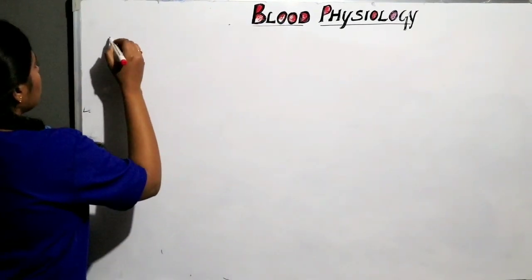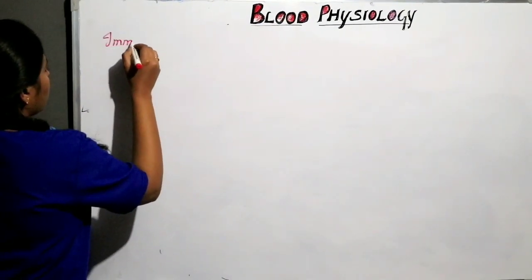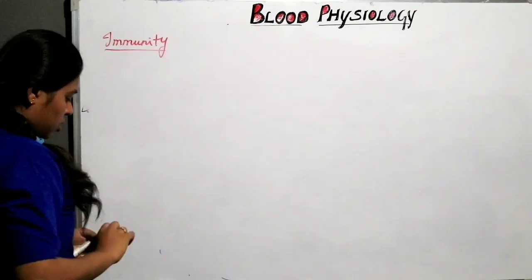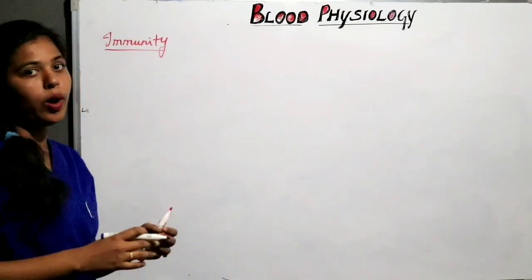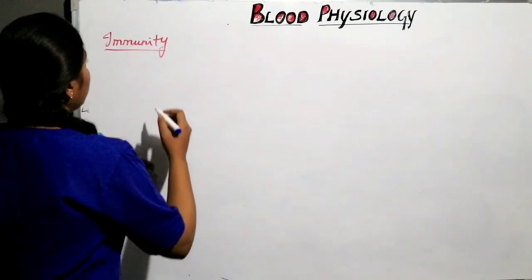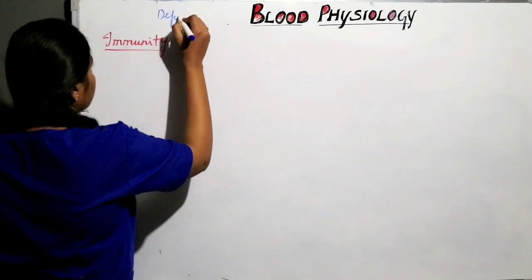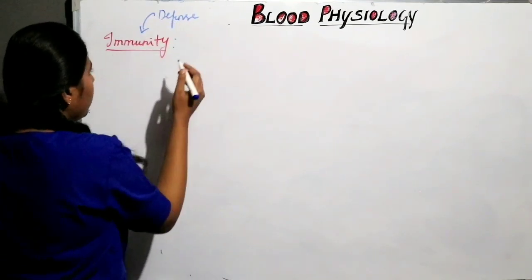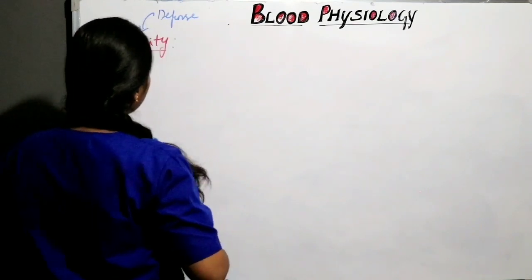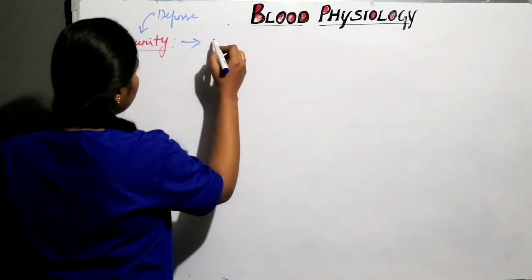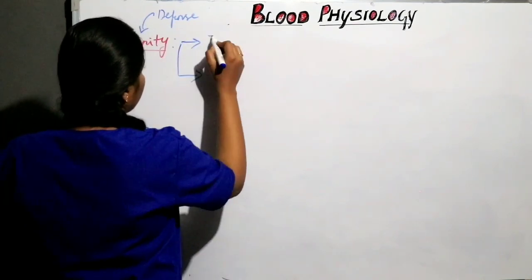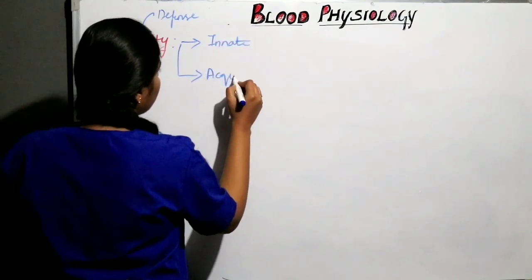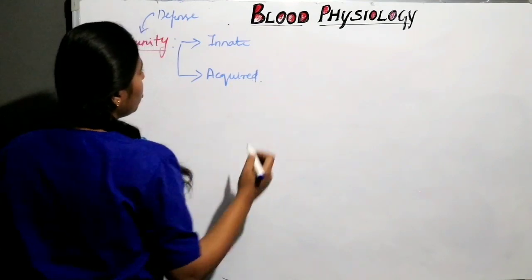Our next topic is immunity. The major function of white blood cells is defense mechanism, contributed by immunity. Immunity is basically divided into two types: innate immunity and acquired immunity. Innate immunity is present from birth, so it is called natural immunity or non-specific immunity. Acquired immunity is also known as specific immunity — it is acquired in response to pathogens which enter the body.